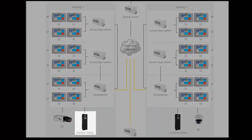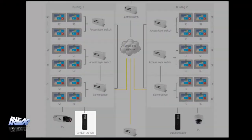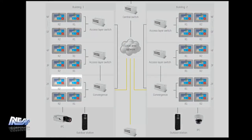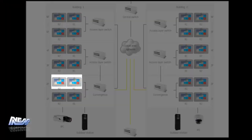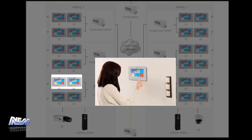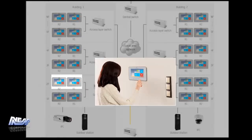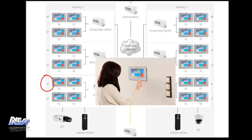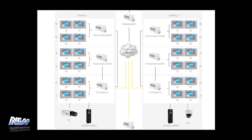When a visitor calls an apartment from a front door station and the apartment owner unlocks the door for the visitor, we want to unlock the door for 5 seconds but also de-secure the lift for typically say 30 to 60 seconds, to give that visitor time to enter the lift and be able to travel up to the apartments level.